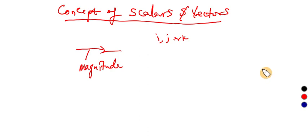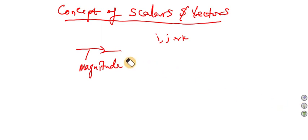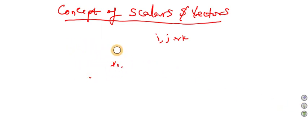So we have seen how we can represent a vector — a line with an arrow. Now let us talk about vector addition. How do we add vectors?